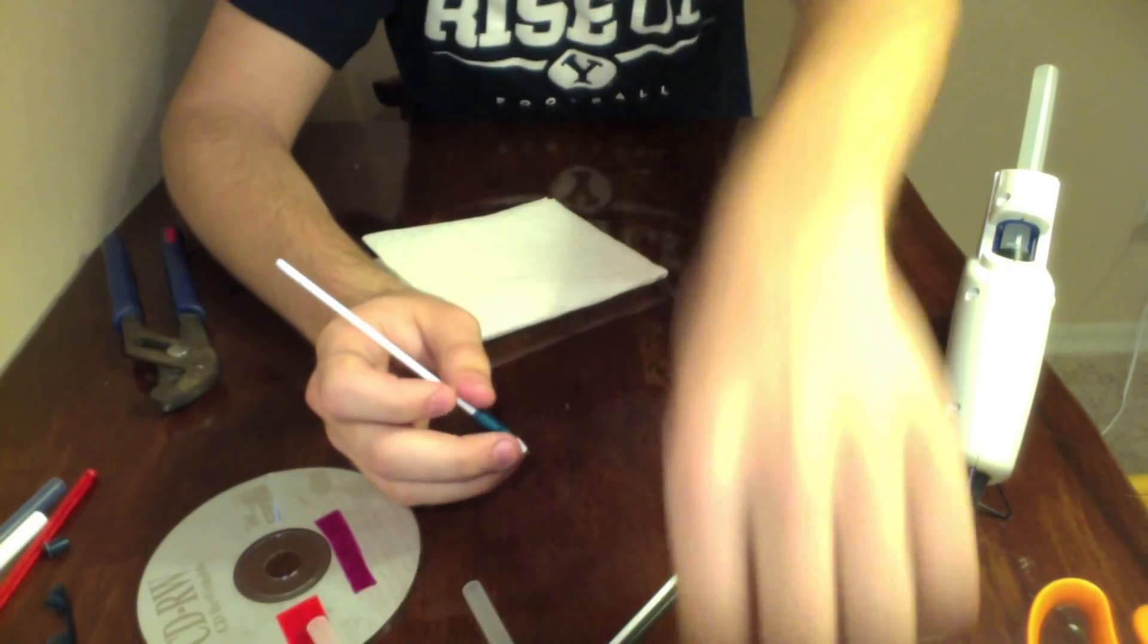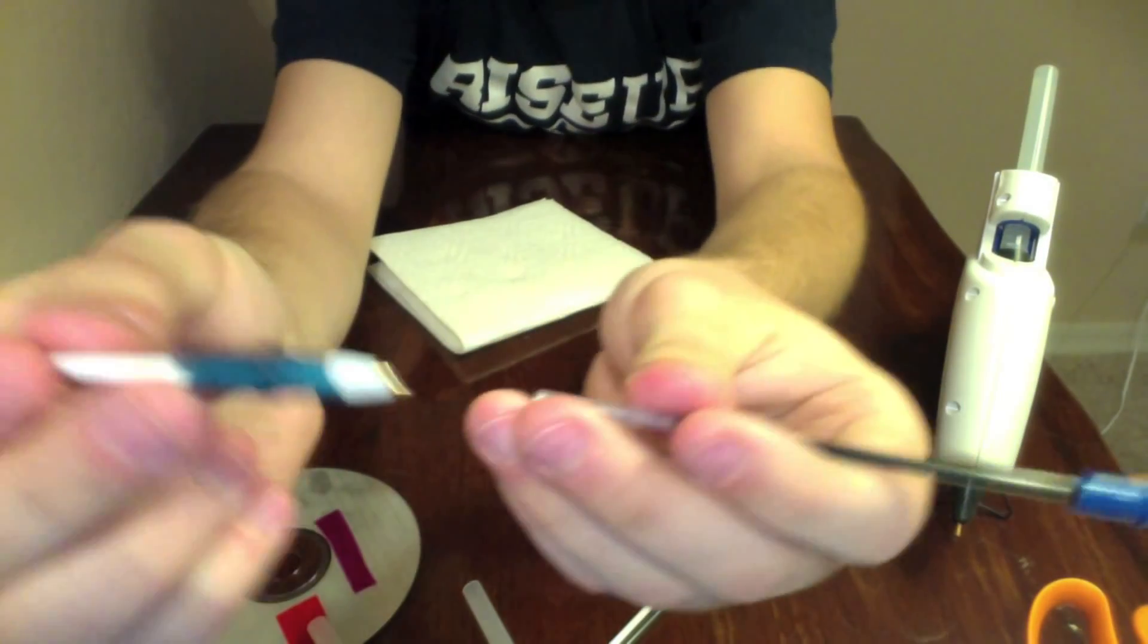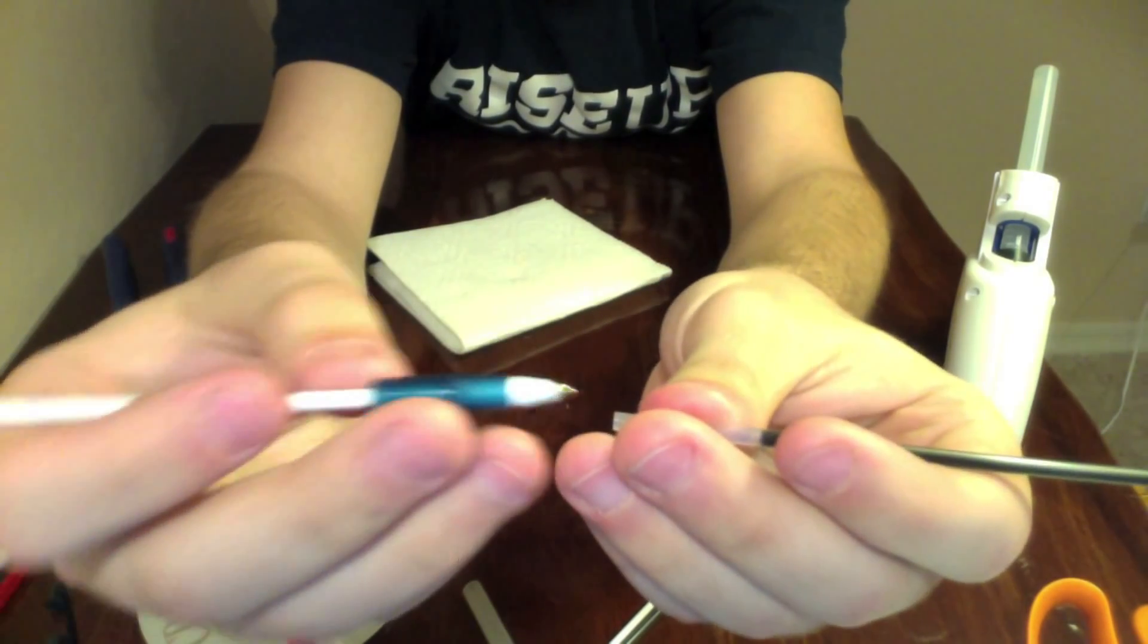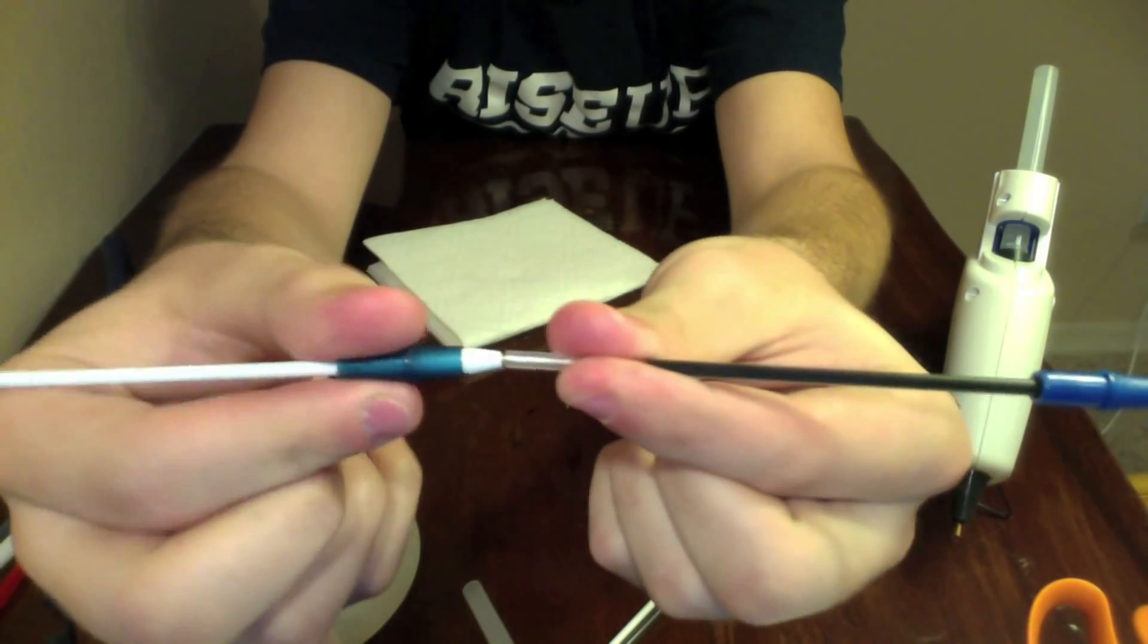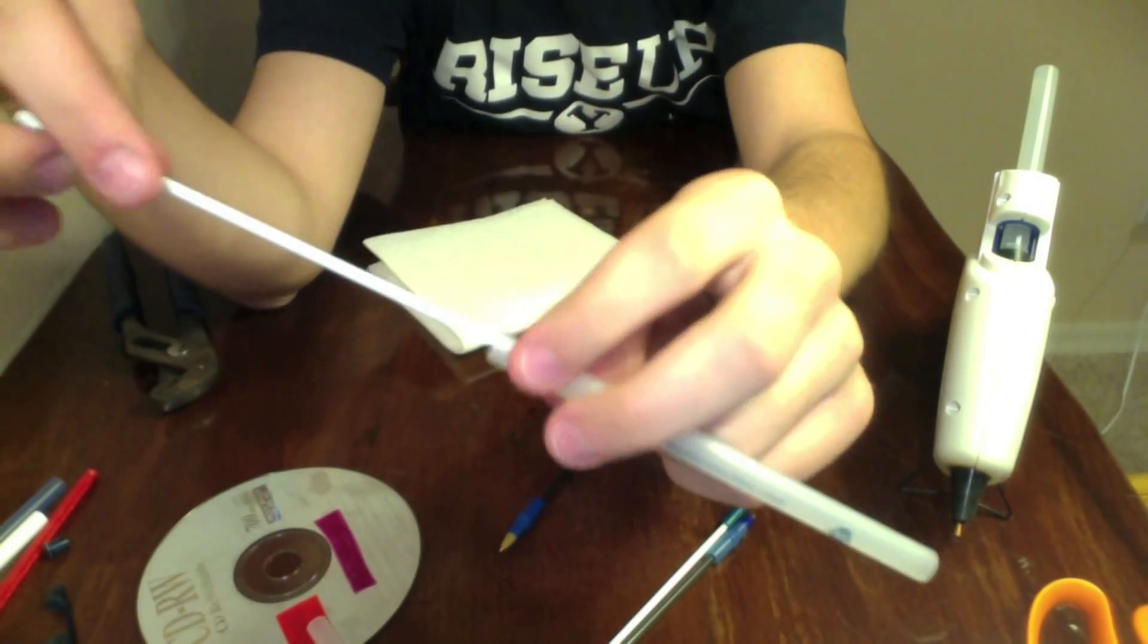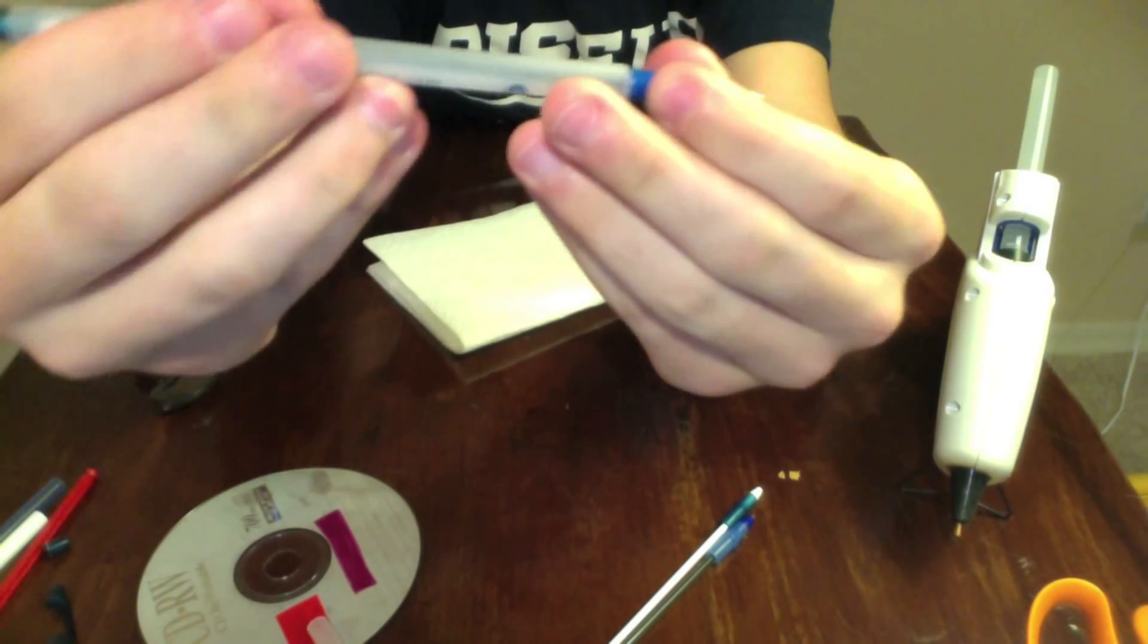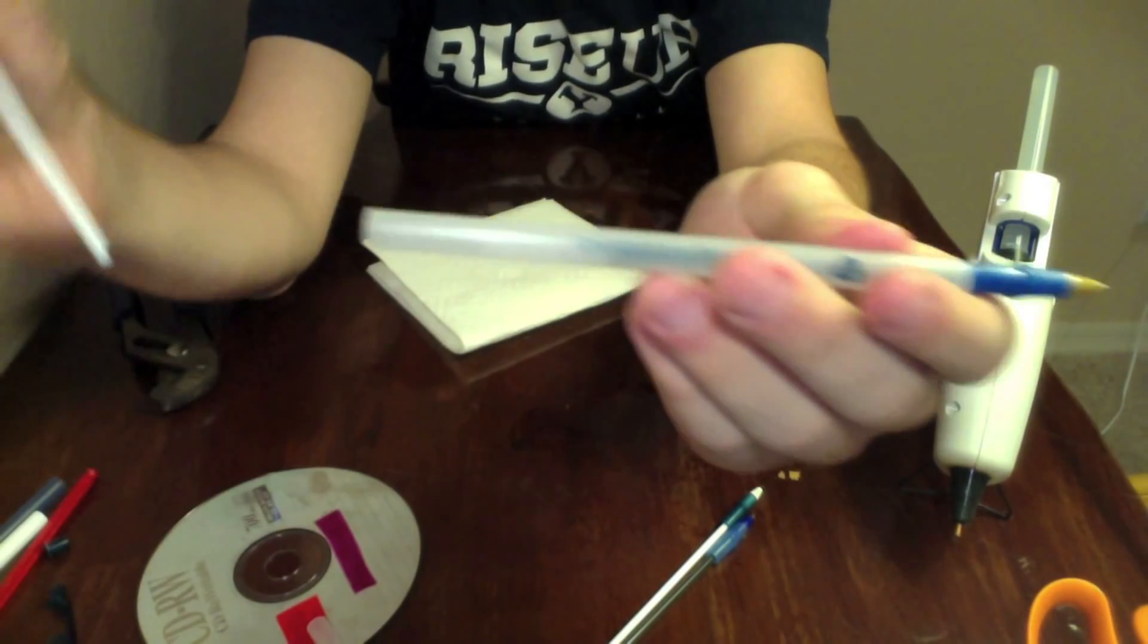Okay, now the main idea behind the way these axles work is you take the tip of one pen, right like this, and it will basically sit in the end of the ink cartridge and spin in the end. So what's going to end up happening is you're going to have two of these ink cartridges sticking inside one pen casing, kind of like this.